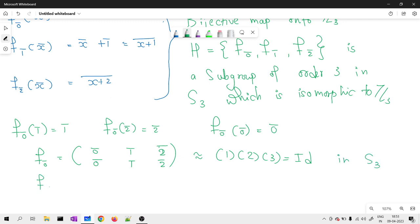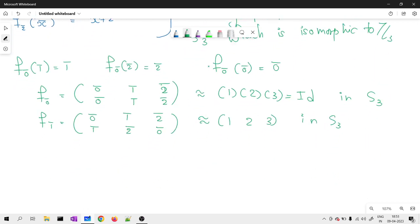If I ask you for F of 1̄, can you think how I can write F of 1̄ in terms of permutation? It is nothing but inputs are 0̄, 1̄, 2̄. Outputs are nothing but 1̄, 2̄, and 0̄. And if I want to see, this is actually isomorphic to (1, 2, 3) in S3, because 1 goes to 2, 2 goes to 3, and 3 goes to 1.